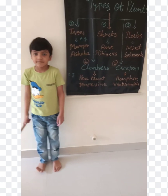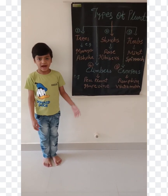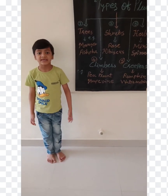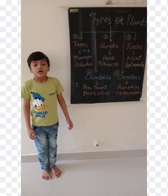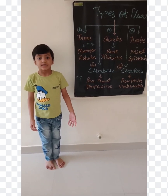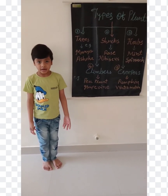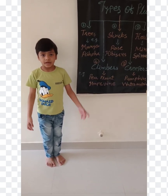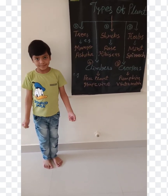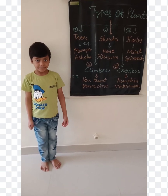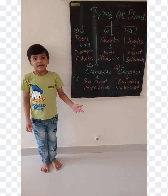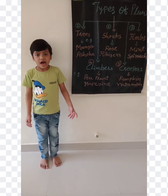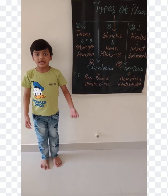Along with these five types of plants, we can also see thorny plants around us, which have thorns that protect them from being eaten by animals. For example: rose and cactus. Do you know, in the cactus plant, thorns are actually its leaves?